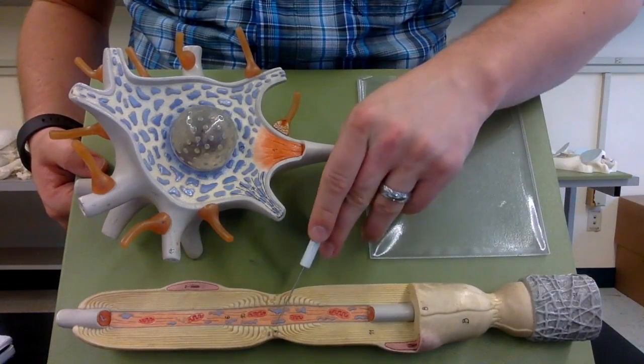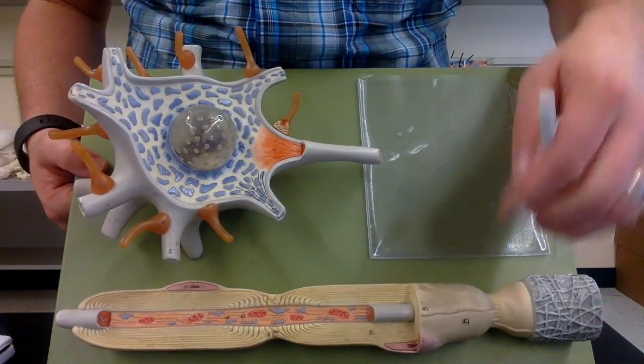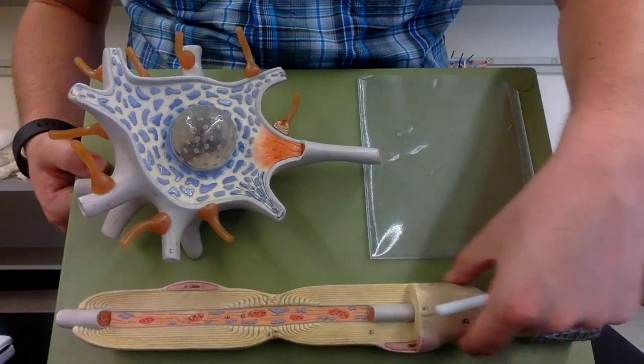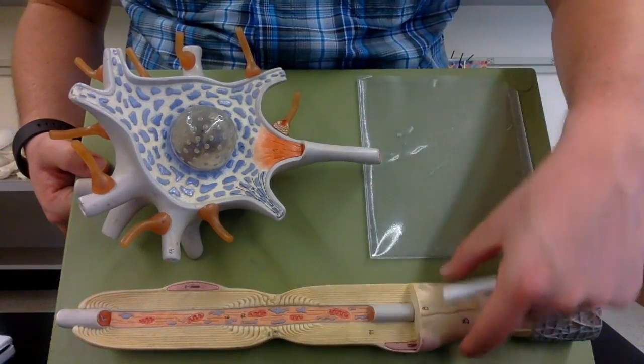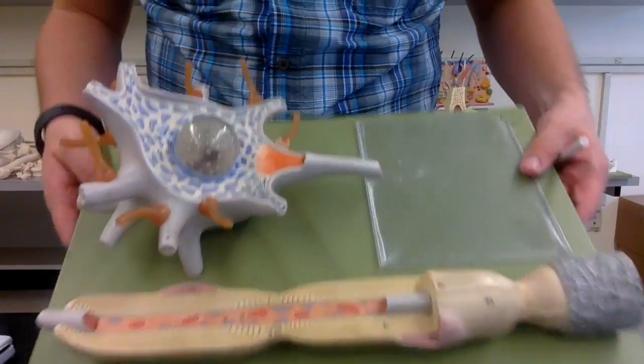So these gaps are nodes of Ranvier, and then the portions where they do cover the axon, those are internodes.